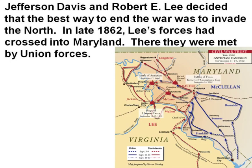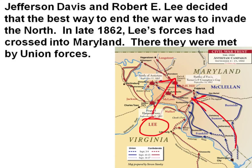Jefferson Davis and Robert E. Lee decided that the best way to end the war was to invade the North. In late 1862, Lee's forces had crossed into Maryland, where they were met by Union forces. Here you see Lee's forces invading Maryland, and then the Northern forces coming from this direction to stop him.